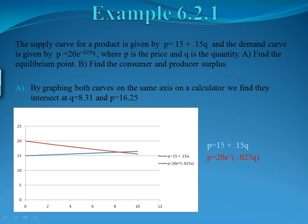Examples of Consumer and Producer Surplus, Example 1. Suppose that the supply curve for a product is given by p equals 15 plus 0.15q, and the demand curve is given by p equals 20e to the negative 0.025q, where p is the price and q is the quantity. First, find the equilibrium point. Second, find the consumer and producer surplus.